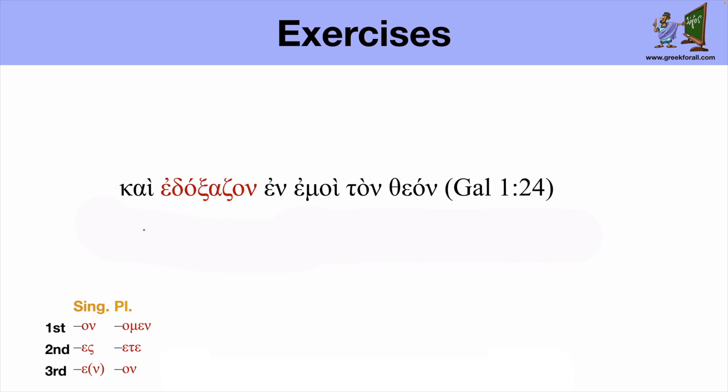So let's continue. Another beautiful example is from the book of Galatians. Let's read. Kai edoksadzon and emoy tontheon. So kai means and. And here we have our verb from doksadzo I glorify. We clearly see the augment. And now we check these endings on.